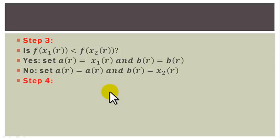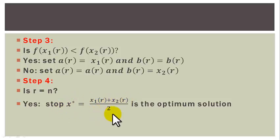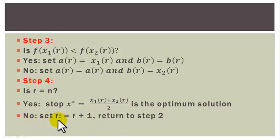Step 4: is R equal to N? If yes, stop and compute X star equals to X1R plus X2R all over 2 to be the optimum solution. If no, set R equals to R plus 1 and return to step 2.